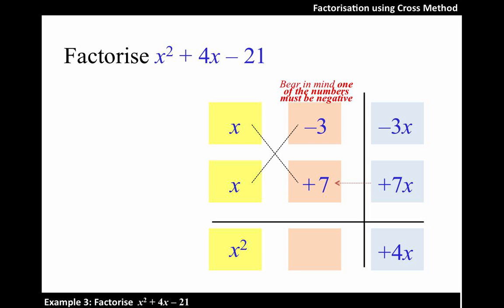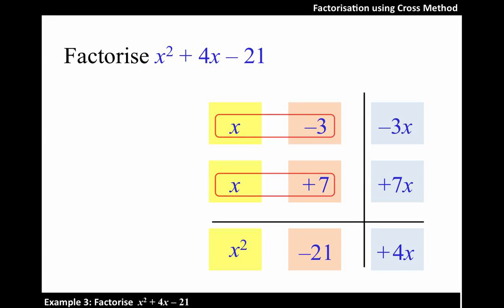Now, let's check. In the middle column, we have negative 3 times positive 7, which results in negative 21. And therefore, the factors are x minus 3 and x plus 7.